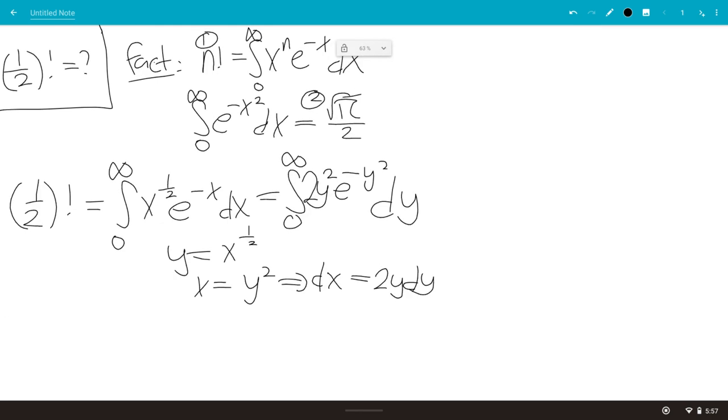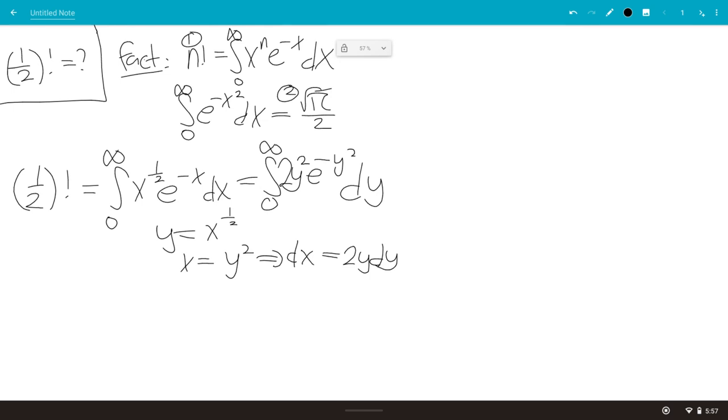And then for this integral, we're going to use integration by parts with DI method. So we're going to differentiate something, and we're going to integrate something. So we're going to differentiate 2y, and we're going to integrate y e to the minus y squared.